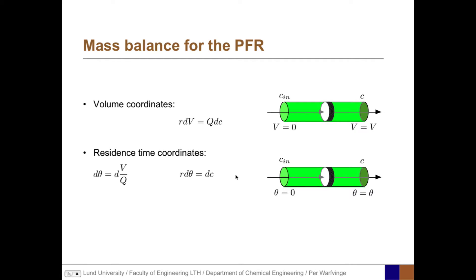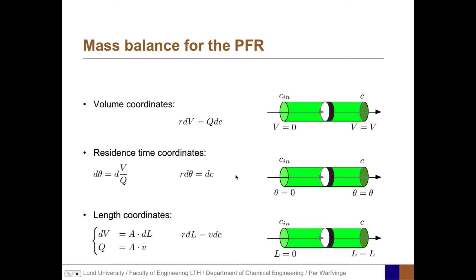If we acknowledge that the differential of the residence time dθ equals the differential of V divided by q, the mass balance becomes r·dθ = dC. We can also express the mass balance in length coordinates. The small slice dV has a volume equal to the cross-section area times the thickness dL. The volumetric flow rate equals the cross-section area times the flow velocity, giving r·dL = v·dC, where small v is the flow velocity in meters per second.